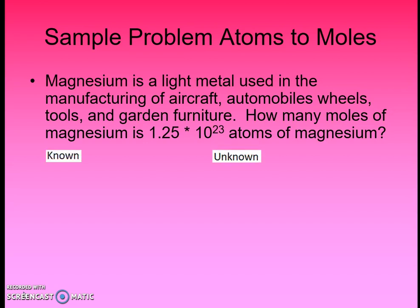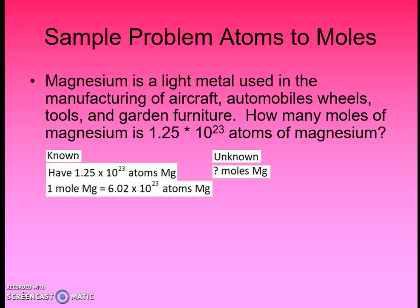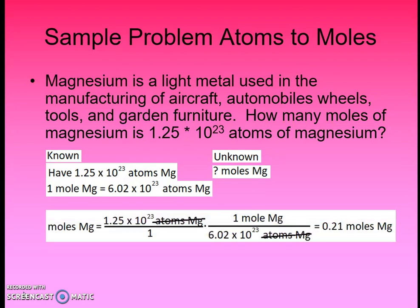Looking at 1.25 times 10 to the 23rd atoms of magnesium, we want to find how many moles that is. We list knowns and unknowns: 'how many moles' is what we're trying to find — that's our unknown. We're given 1.25 times 10 to the 23rd atoms of magnesium. We know that 6.02 times 10 to the 23rd atoms equals 1 mole, and since magnesium is an element, the representative particle is atoms. Taking 1.25 times 10 to the 23rd atoms over 1, and placing 6.02 times 10 to the 23rd atoms of magnesium in the denominator, the atoms cancel out, leaving moles of magnesium. Solving out, there are 0.21 moles of magnesium in 1.25 times 10 to the 23rd atoms of magnesium.